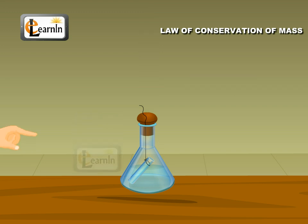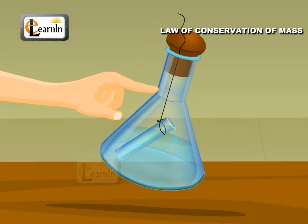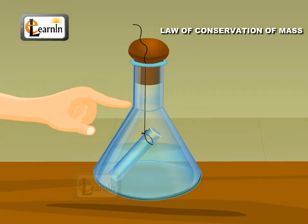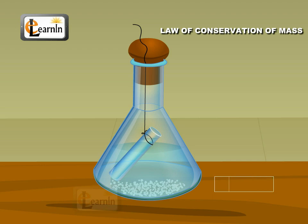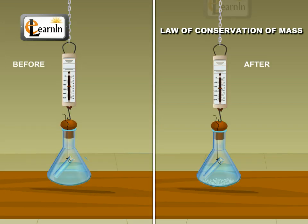The conical flask is tilted so that the two solutions are mixed. A white precipitate of barium sulfate will be formed, showing that the reaction has occurred. Now weigh the complete apparatus all over again. There will be no change in the weight before and after the reaction.